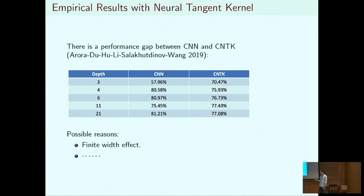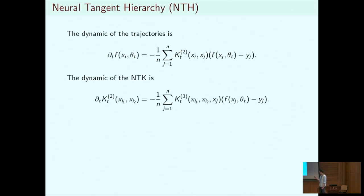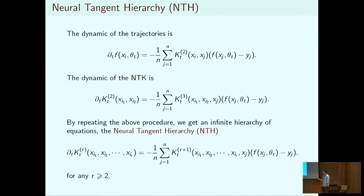The goal of this talk is to understand the finite width correction for the neural tangent kernel. Coming back to the dynamics of the trajectories — we cannot analyze them because we don't know the neural tangent kernel. However, we can study the dynamics of this kernel by taking another derivative. It turns out the dynamics of this kernel is governed by a new kernel, which is a threefold tensor. We can keep taking more derivatives to get an infinite hierarchy of equations, where the derivative of the r-th kernel is governed by the (r+1)-th kernel, an (r+1)-fold tensor. We call this the neural tangent hierarchy.